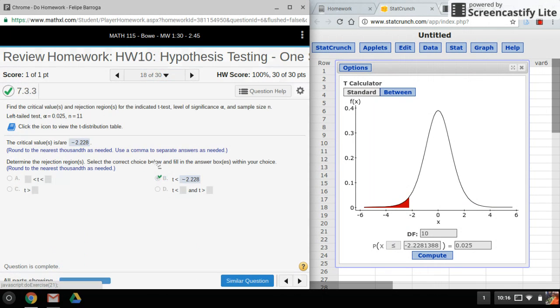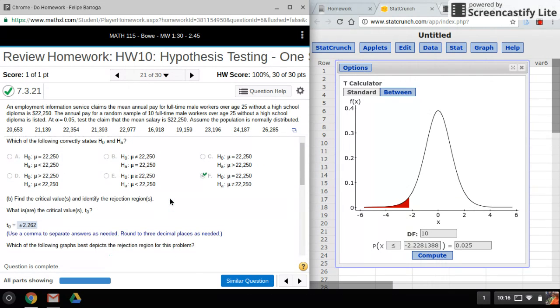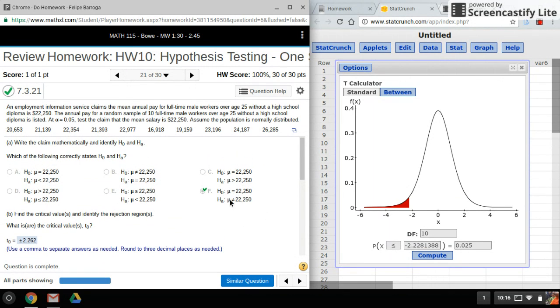With two tail test, and again from the alternative hypothesis that's how we tell not equals is a two tail test. So it's going to be kind of similar to the two tail test for the Z test.